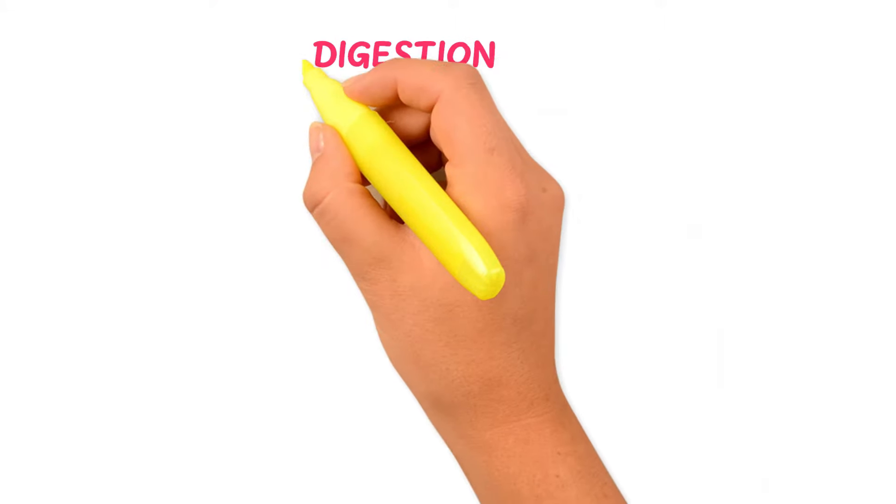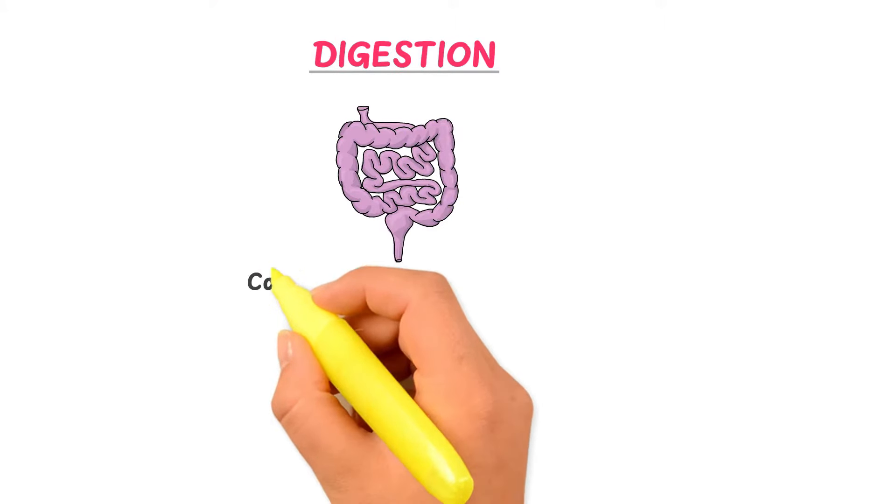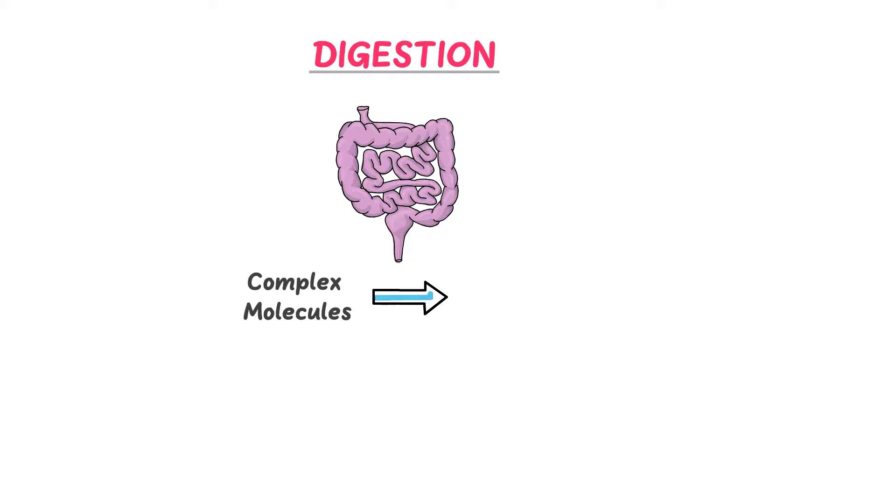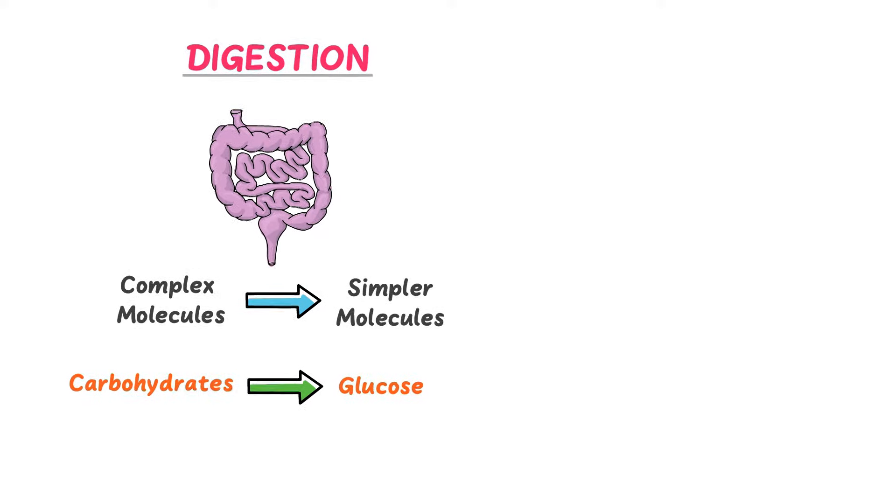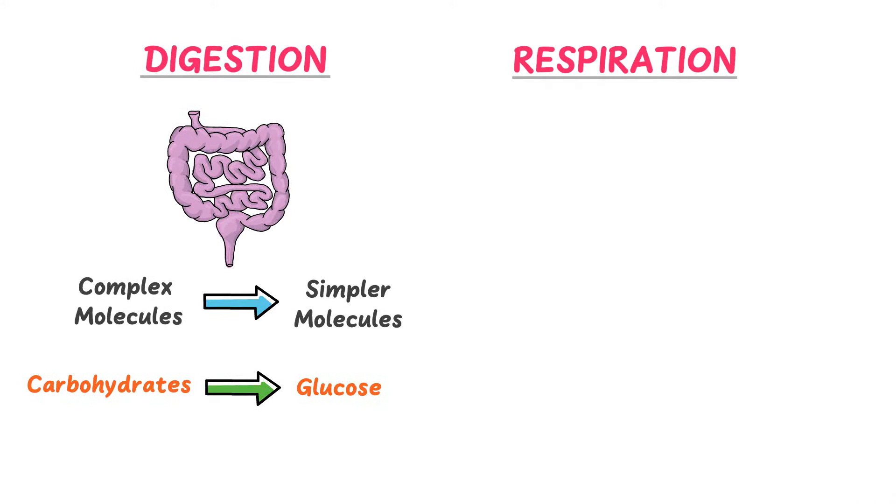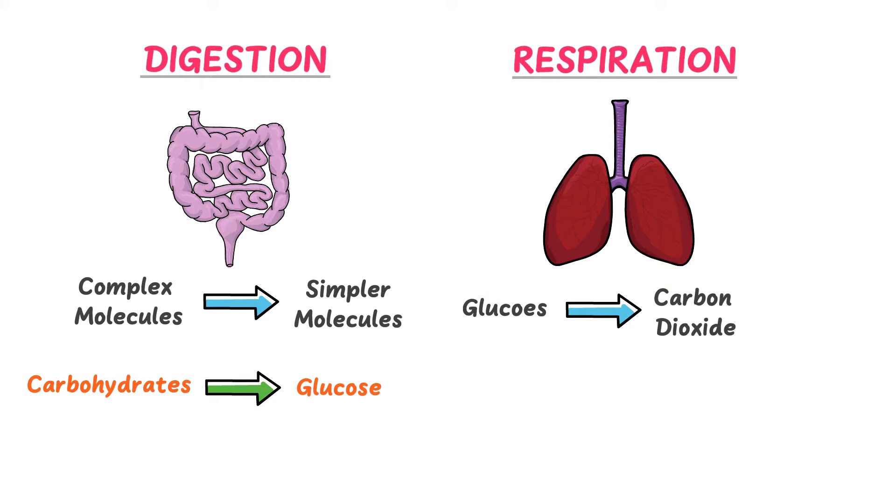The second example of chemical change is digestion. During digestion, complex molecules are converted into new and simpler substances in the presence of enzymes. For example, carbohydrate is converted into glucose. The third example of chemical change is respiration. During respiration, glucose in the presence of oxygen is converted into carbon dioxide plus water. Thus burning of food, digestion, respiration, etc. are the processes in which chemical changes occur.